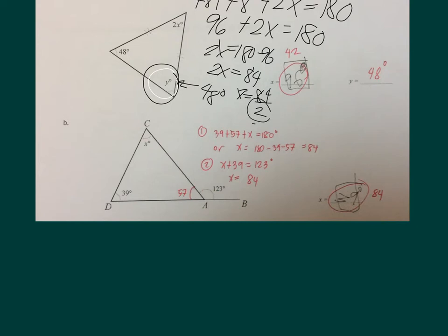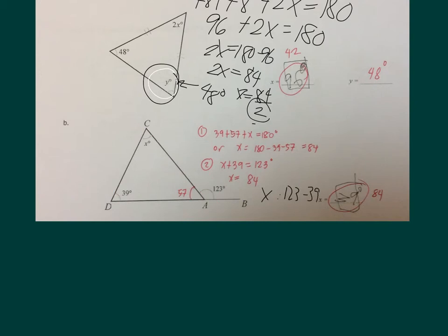The second way: the sum of the two remote interior angles is always equal to the exterior angle. So X plus 39 equals 123, which means X equals 123 minus 39, and that is equal to 84.